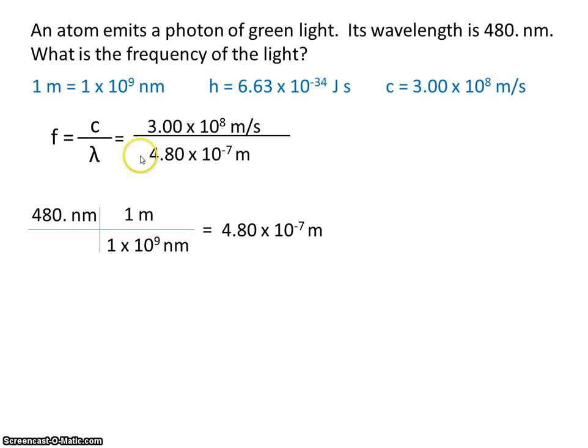So 480 nanometers equals 4.8 times 10 to the minus 7th meters. Now we can plug that in for the wavelength. Crunch the numbers on your calculator. And the units are hertz, remember. Frequency is measured in hertz. So the answer is 6.25 times 10 to the 14th hertz.